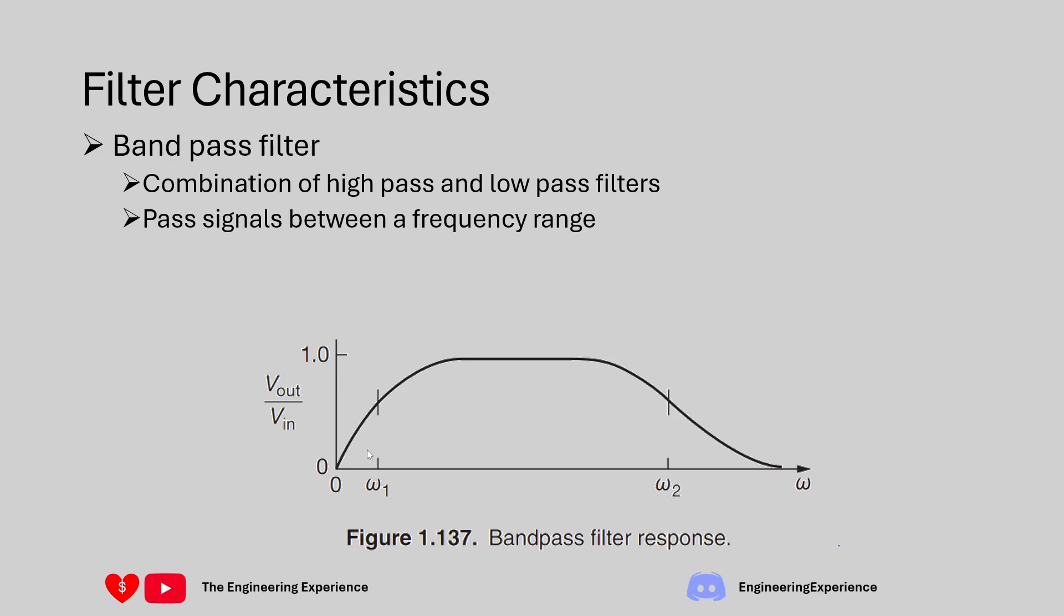Omega 1 is the lower cutoff frequency. Any signal below this frequency will get attenuated. The second cutoff frequency is omega 2 and anything above this point will get attenuated as well.